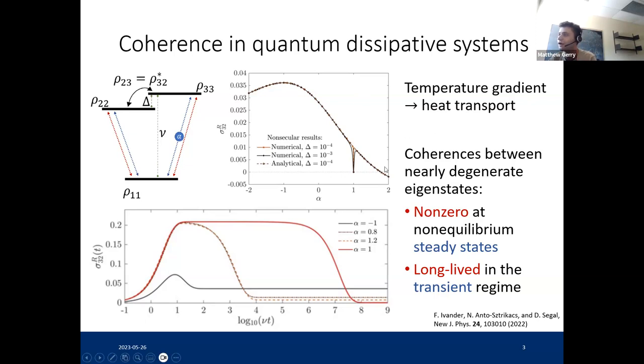For instance, in non-equilibrium steady states, even in the long time limit, we see that this ρ₂₃, this off-diagonal element of the density operator will be generally non-zero. And also in the transient regime, even in equilibrium situations, but just during this process of thermalization, there are coherences that are long lived, and they die off actually on a time scale that's related to this splitting. It's proportional to the splitting to the power of minus two.